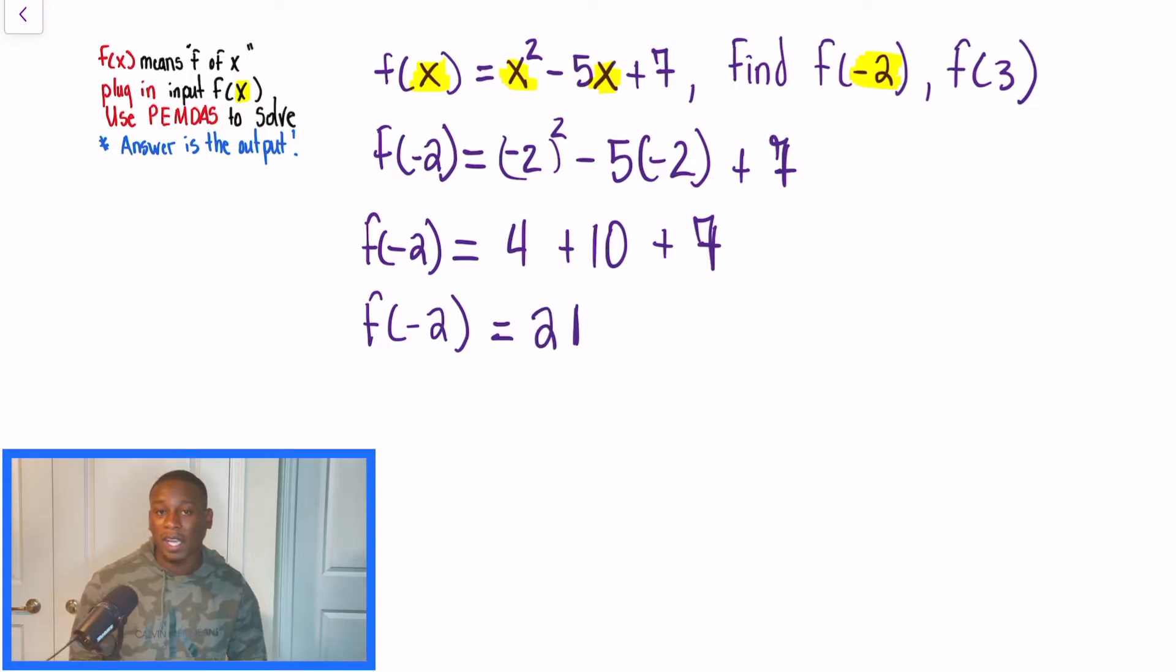And what this is saying is when our independent variable x is negative 2, the output or the answer to the function is going to be 21. And we're going to look at one more problem before we wrap this up and just hit a few key takeaways that you guys have to know for evaluating functions. Oh, you know what? I'm sorry, I got ahead of myself. Let's also do positive 3.